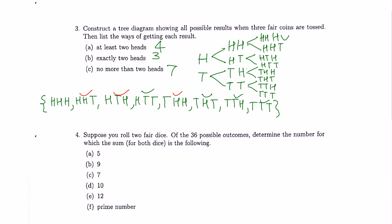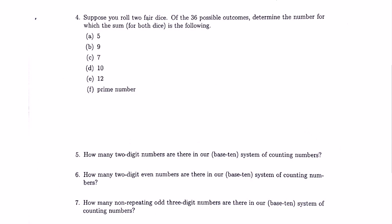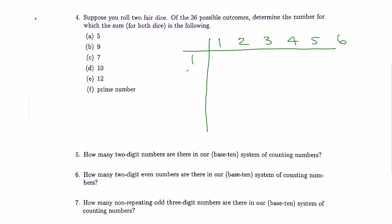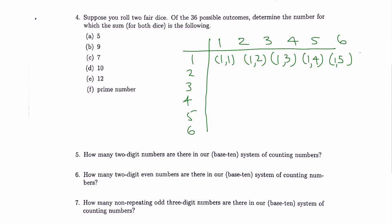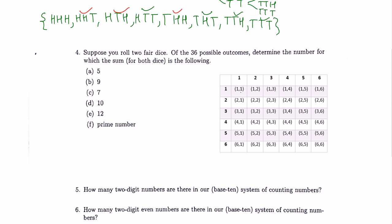Number four: suppose you roll two fair dice — there are 36 possible outcomes. One die has six faces: 1, 2, 3, 4, 5, 6. We draw a table listing all 36 possible pairs like (1,1), (1,2), (1,3), and so on.